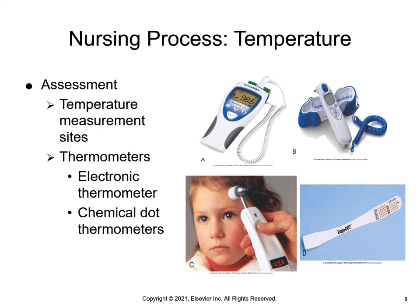Two types of thermometers are available for measuring body temperature: electronic and disposable. The greatest advantage of electronic thermometers is that readings appear in seconds and are easy to read. A is an electronic thermometer with a disposable probe. B is an electronic tympanic membrane thermometer. C is a temporal artery thermometer. D is a chemical dot disposable single-use thermometer.